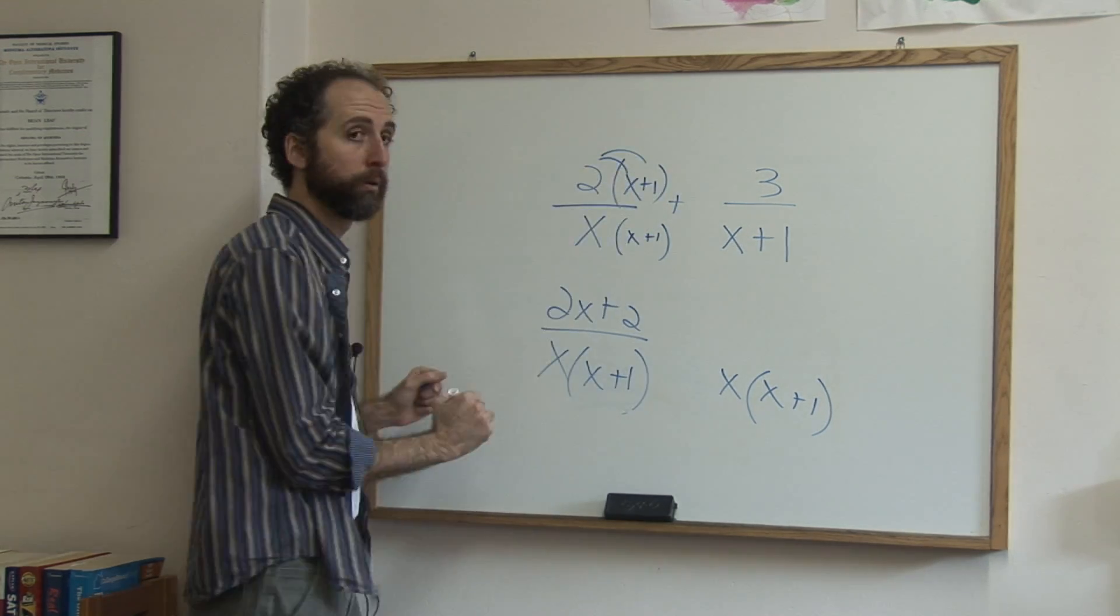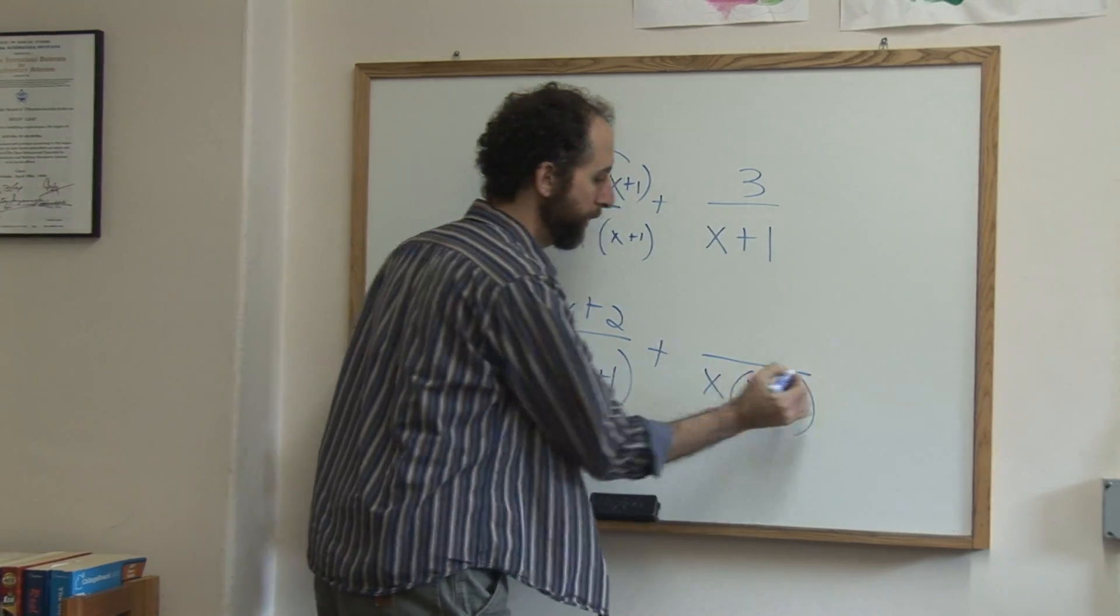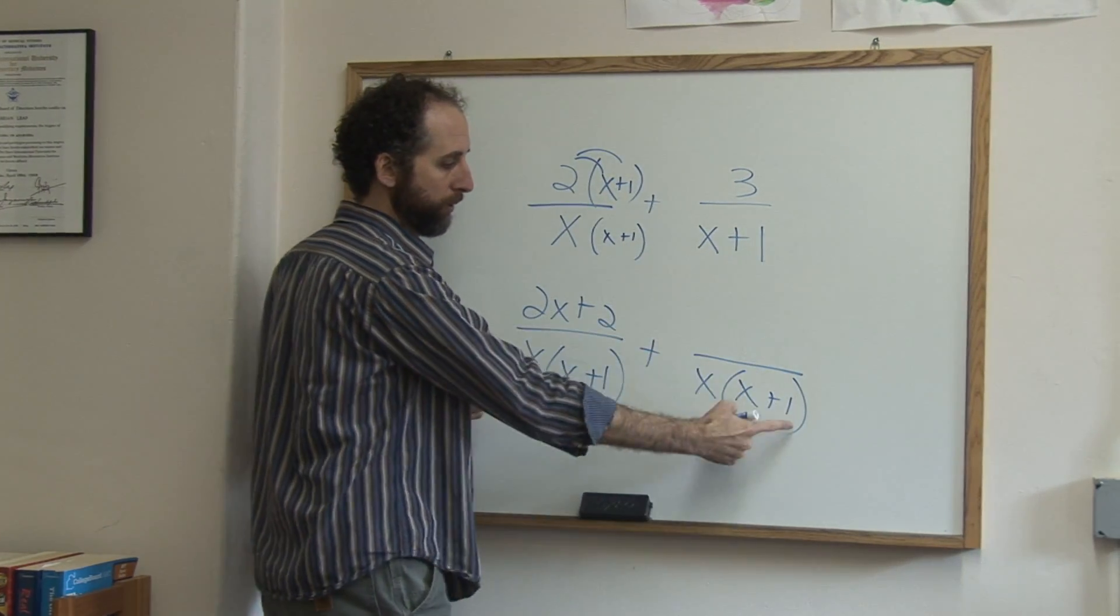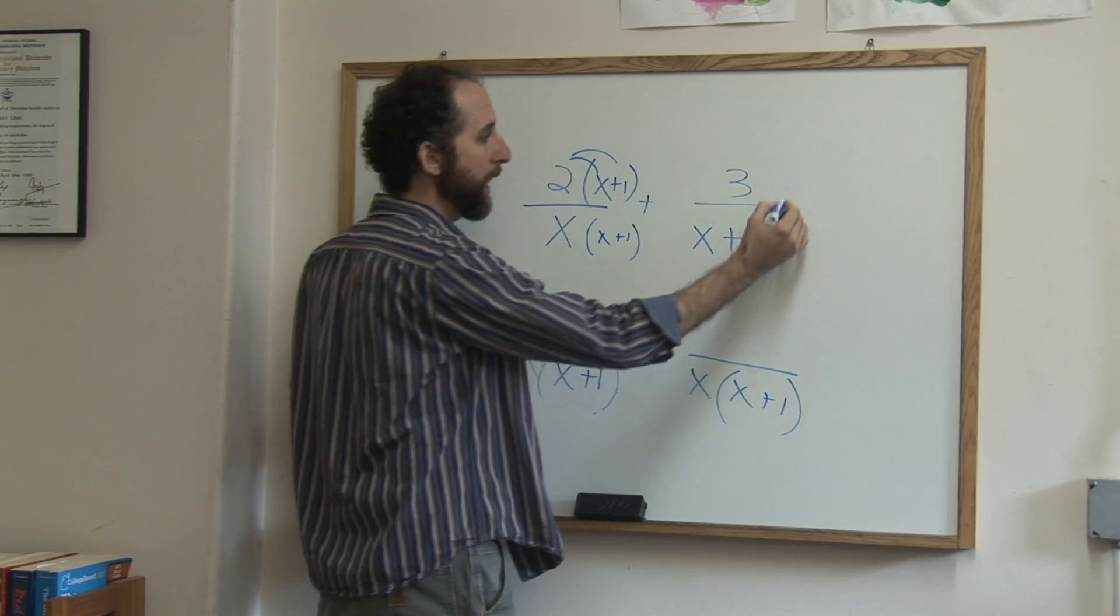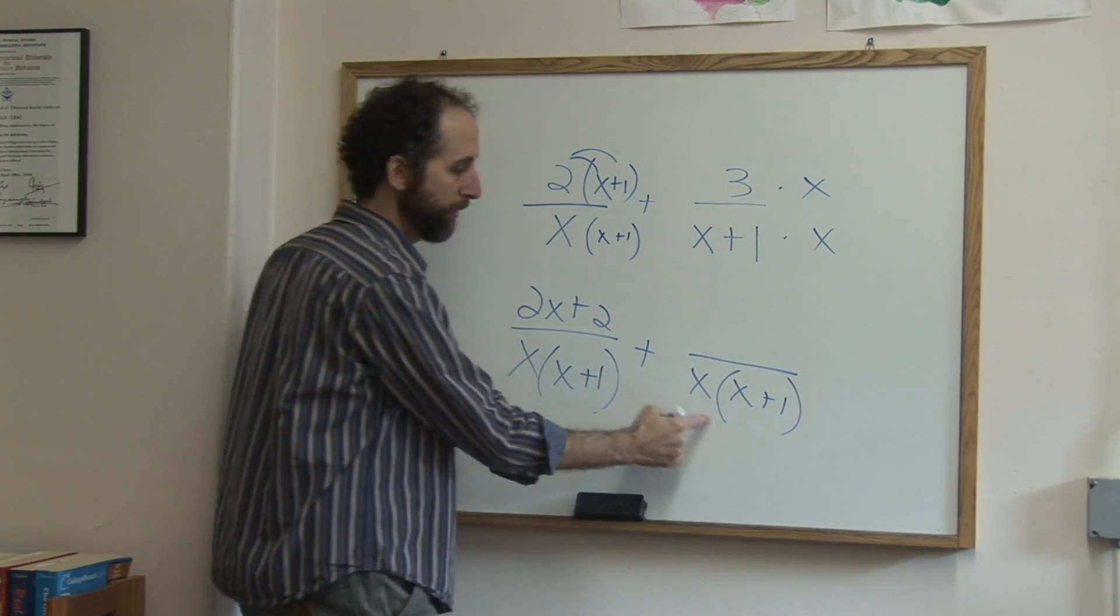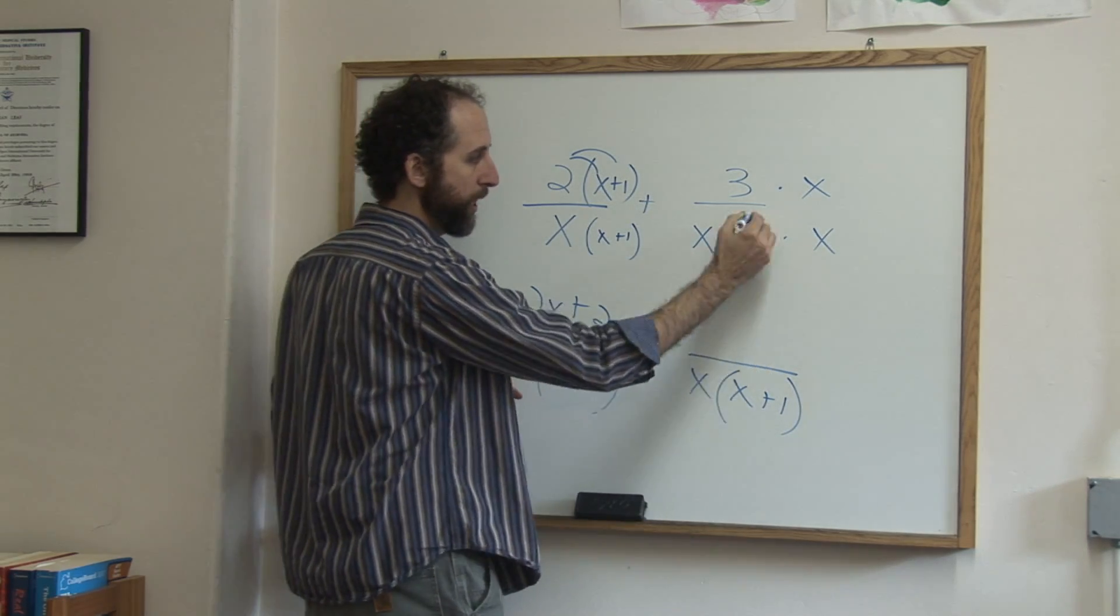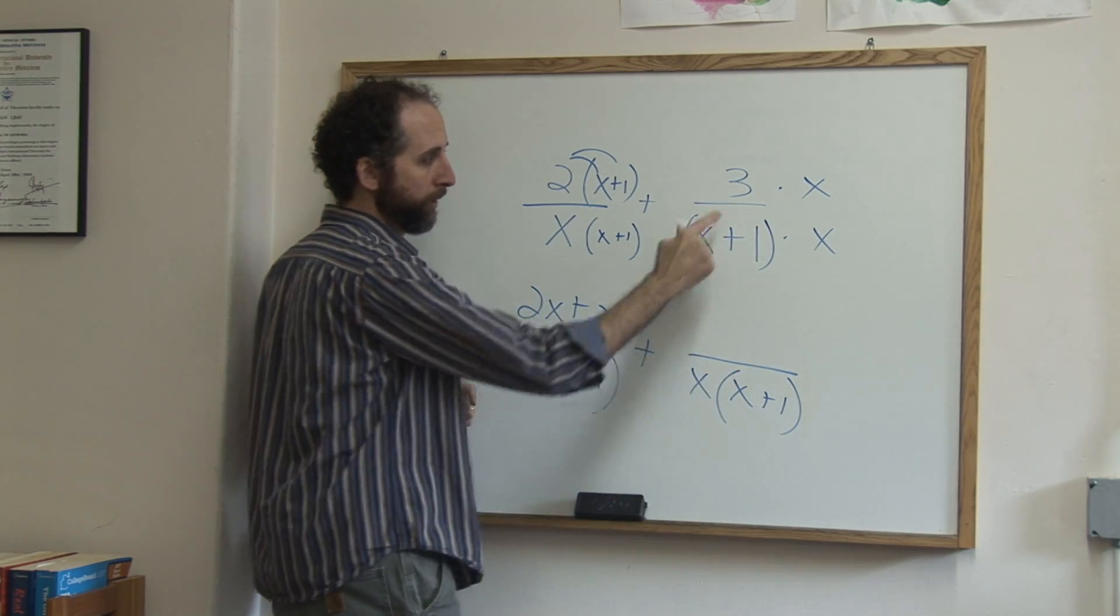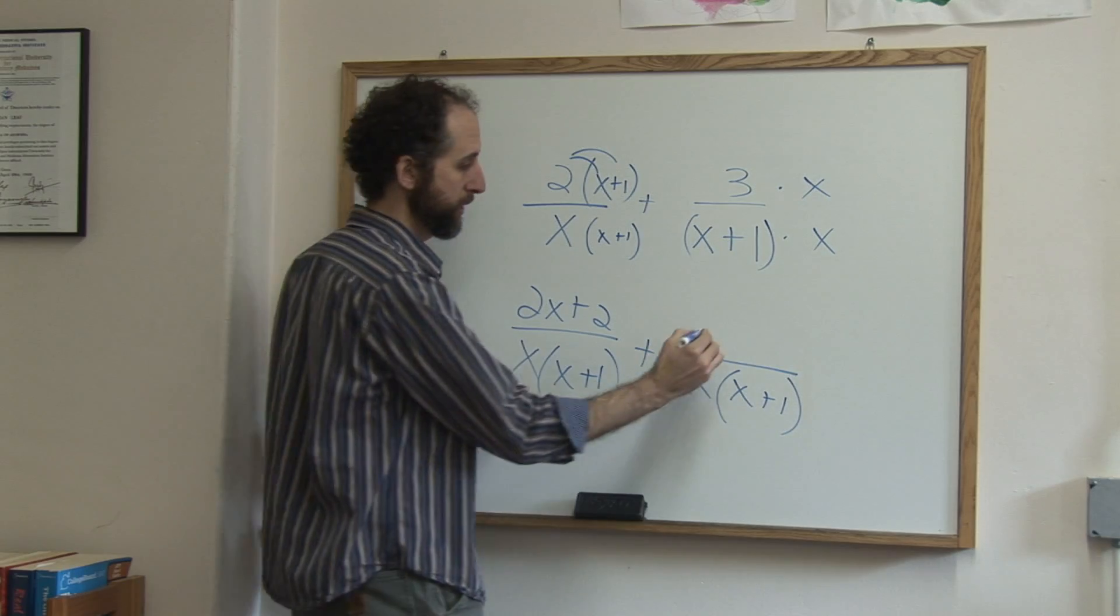Now here, I already have this part, I just need that. So I'm going to multiply the top and the bottom by x to give me this. x plus one times x is that. On the top I get three times x is three x.